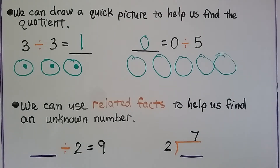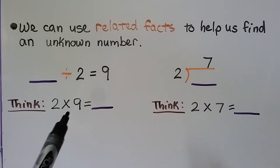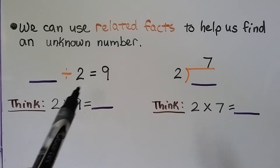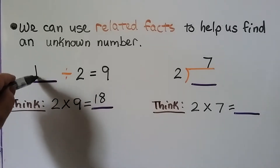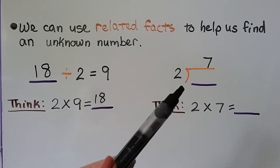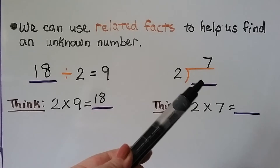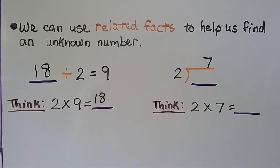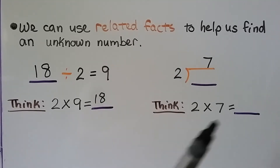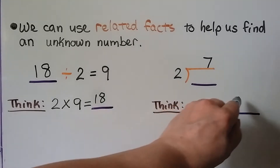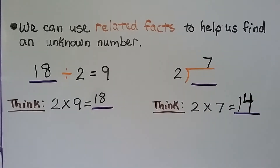We can use related facts to help us find an unknown number. Here we have some number divided by 2 is equal to 9. We can think 2 times 9 equals some number — using the related multiplication fact. 2 times 9 is equal to 18, so 18 divided by 2 is equal to 9. For a division problem written with a bracket where some number divided by 2 equals 7: we multiply the two outside numbers, 2 times 7 equals 14, so the dividend must be 14.